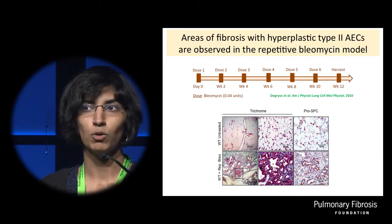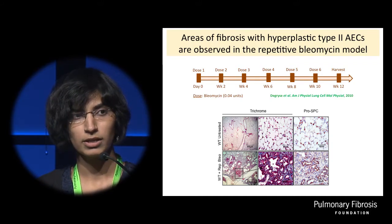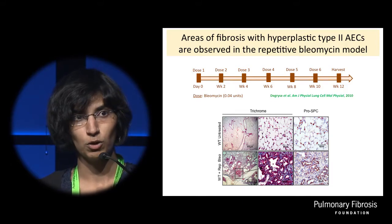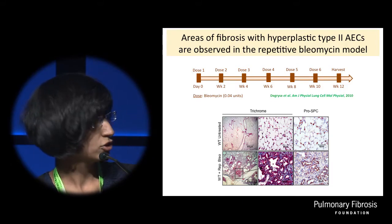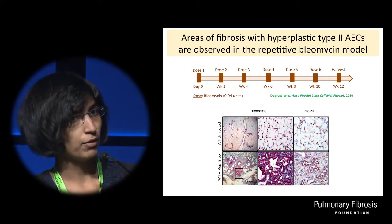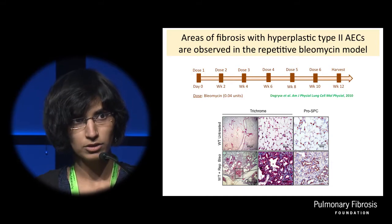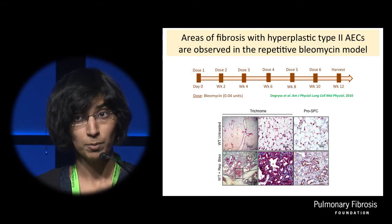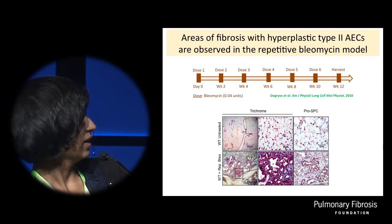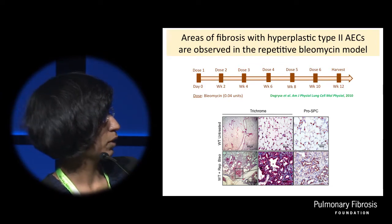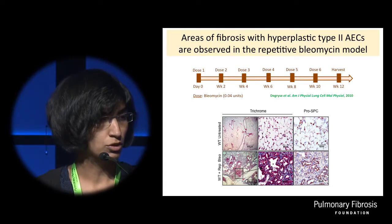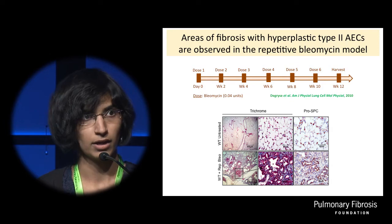We used the repetitive bleomycin-induced lung fibrosis mouse model, established in our lab six or seven years ago. We gave six doses of bleomycin to mice at intervals of two weeks, and two weeks after the last dose, we harvested the lungs. Repetitive bleomycin causes severe fibrosis, and we observe human IPF-like hyperplastic type 2 AECs in areas of fibrosis. The hyperplastic type 2 AECs stained positive for pro-SPC, confirming their identity. These findings reproduce what we found in our published work and validate our model.